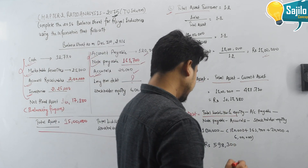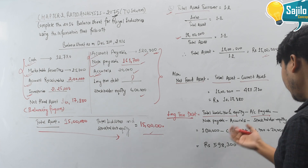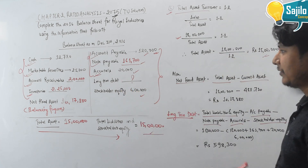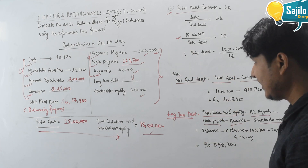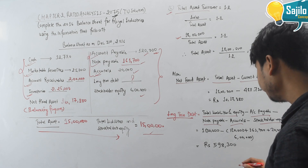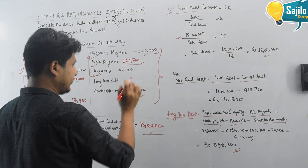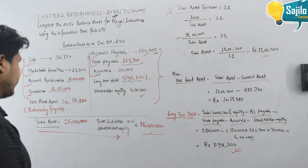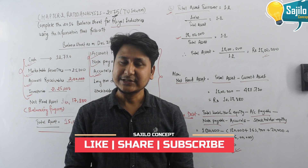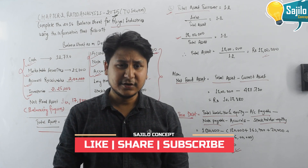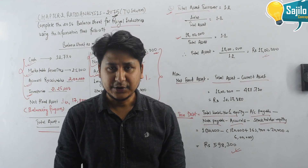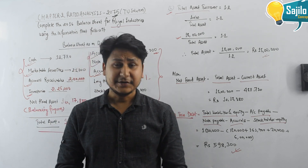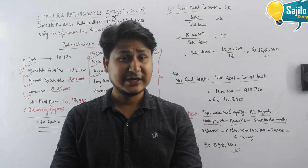Total liability and equity minus accounts payable, minus notes payable, minus accruals, minus shareholder equity gives the long-term debt as the balancing figure. Please like, share, and subscribe. You can also join us on Facebook or the Facebook group. Thank you, see you in the next video.